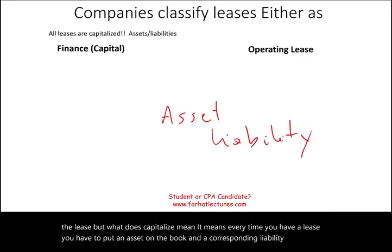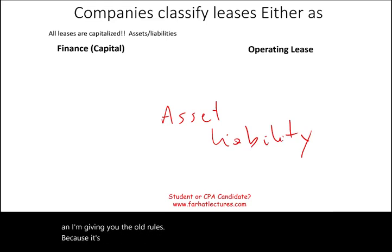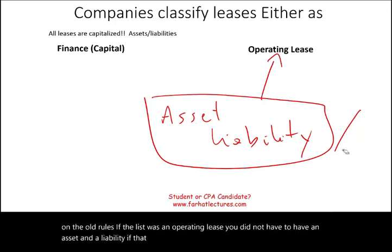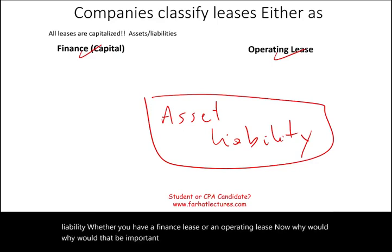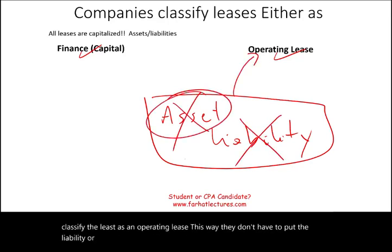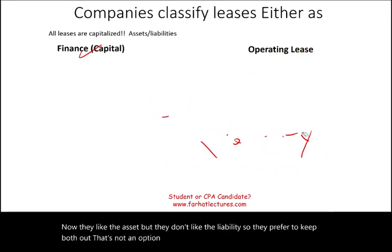Based on the old rules, under an operating lease you did not have to capitalize the lease — you didn't need an asset and a liability. But that's changed. Now you have to have an asset and a liability whether you have a finance lease or an operating lease. Companies used to try everything to classify leases as operating leases to keep the liability off the books, but that's not an option anymore. All leases are now capitalized.